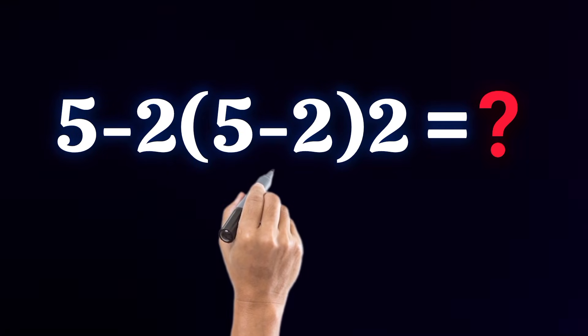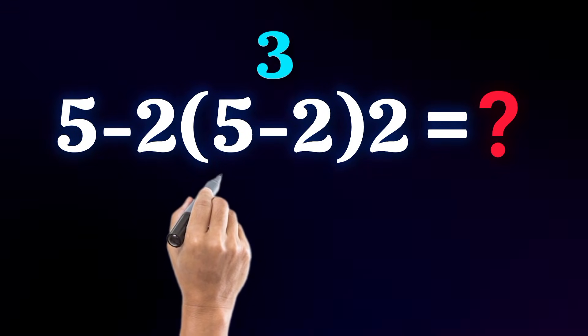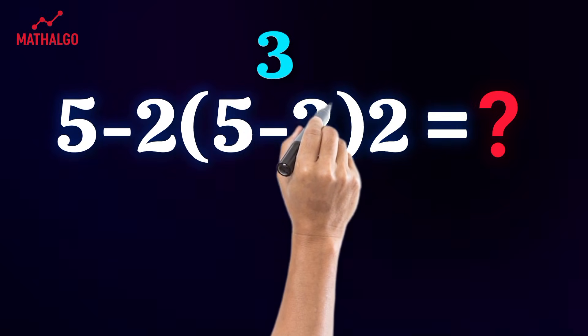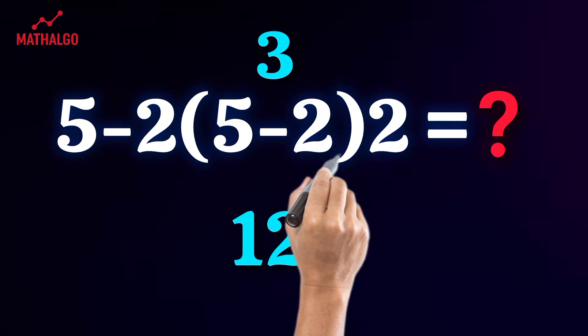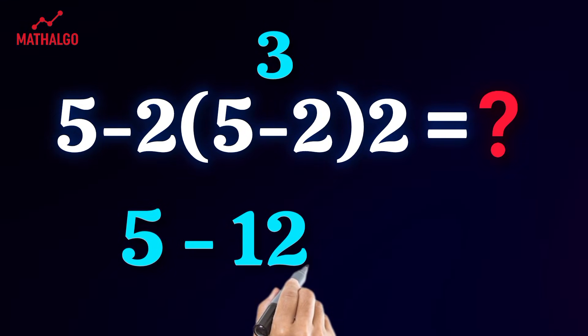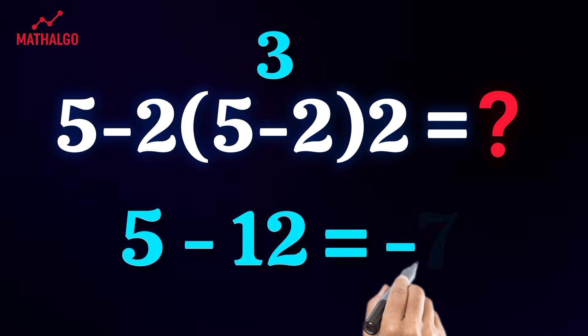Correct method, parentheses first, done. Now multiplication left to right. 2 times 3 times 2 equals 12. Now the expression is 5 minus 12. And the correct answer is negative 7.